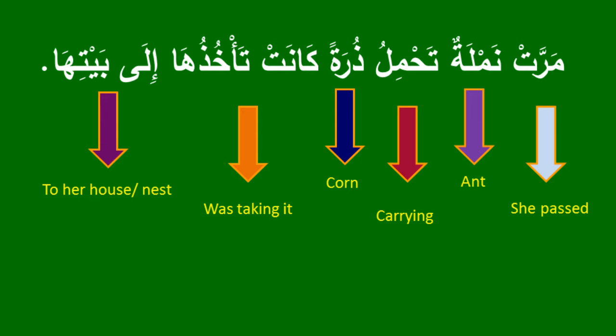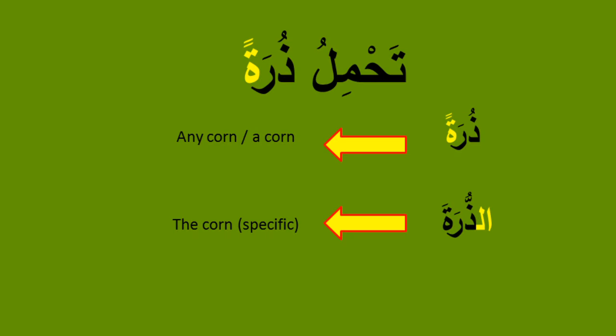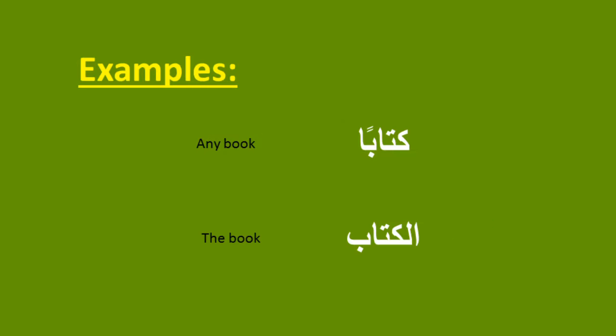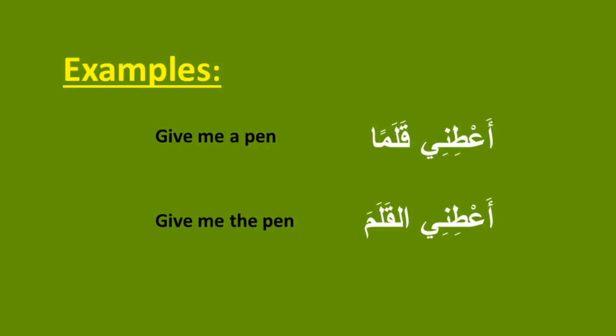مرت نملة تحمل ذرة. مرت means 'she passed'. ذرة is written with tanwin, meaning any corn — it's not a specific one. If I say كتابا that means 'any book', but الكتاب means 'the book'. Similarly: أعطني قلما — give me a pen; أعطني القلم — give me the pen.